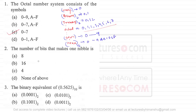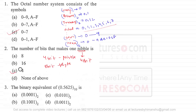The next question asks about the number of bits that makes one nibble. A nibble is a combination of 4 bits. We have 1 bit, 4 bits making a nibble, and 8 bits making a byte. Therefore the answer is option C.